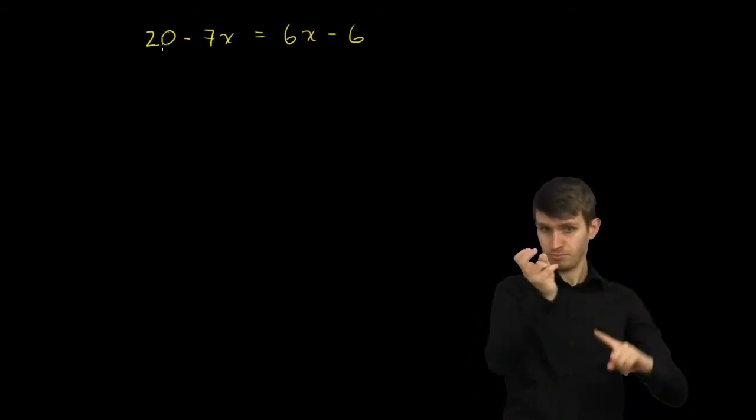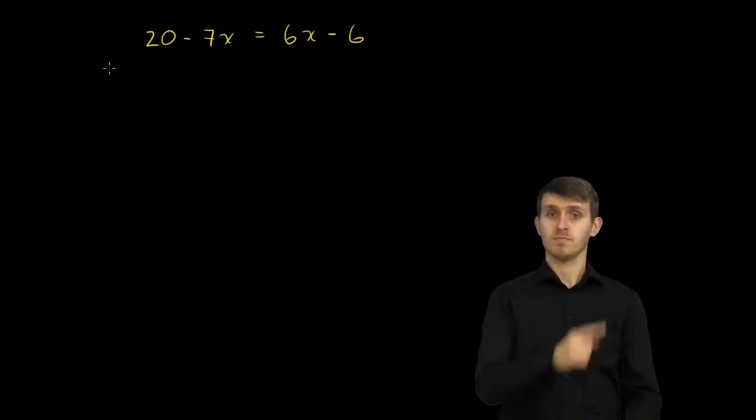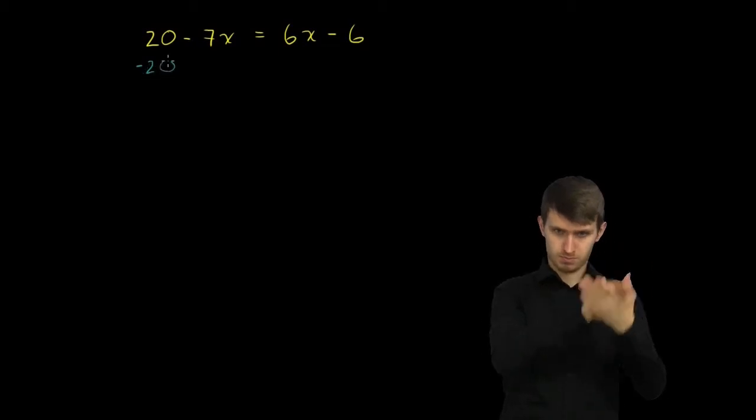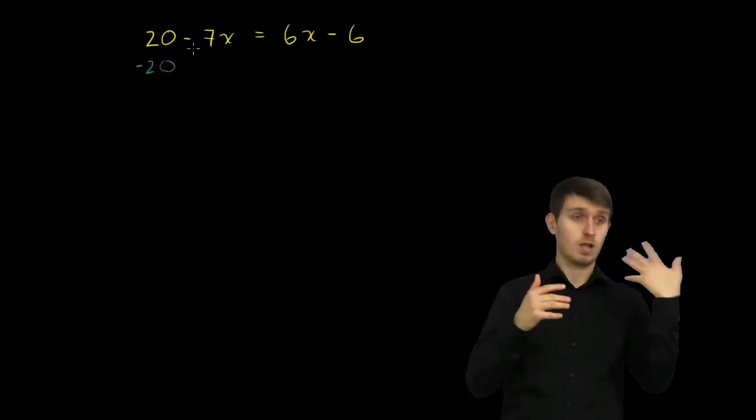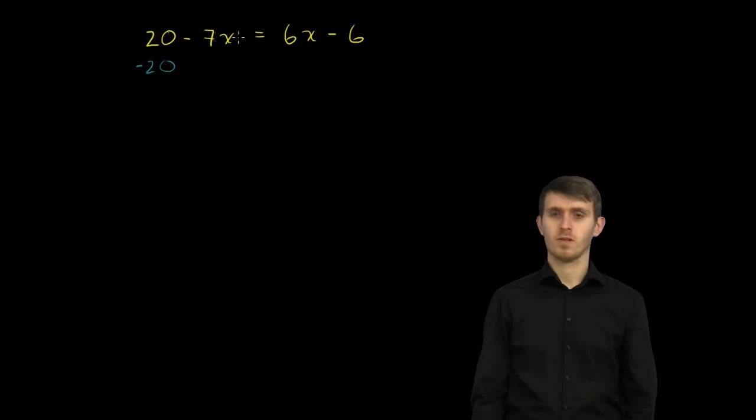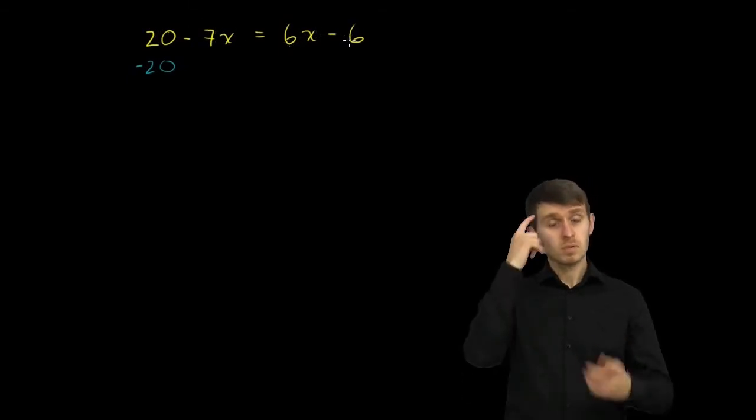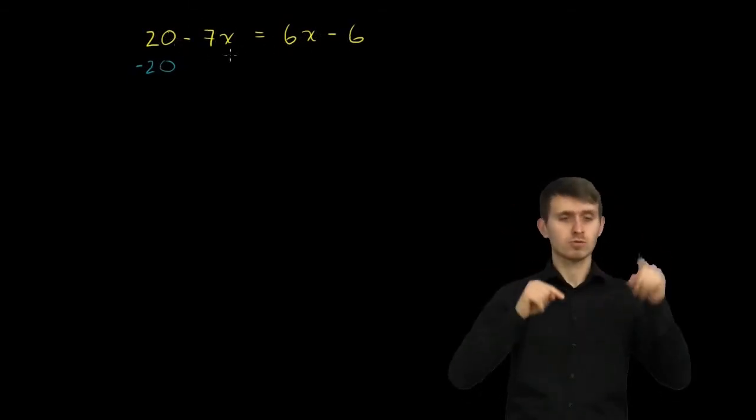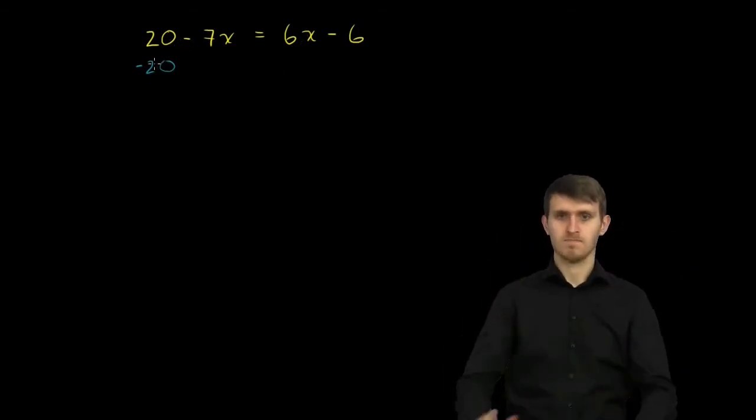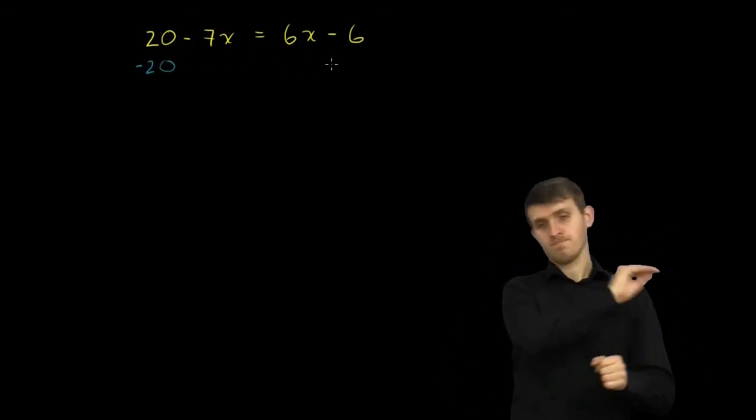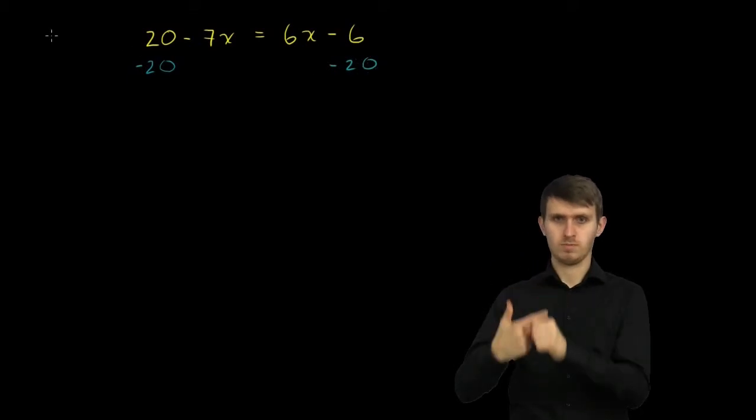To get the 20 out of the way from the left-hand side, let's subtract it. But this is an equation. Anything you do to the left-hand side, you also have to do to the right-hand side. In order for them to still be equal, anything I do to the left-hand side, I have to do to the right-hand side. So I subtracted 20 from the left. Let me also subtract 20 from the right.